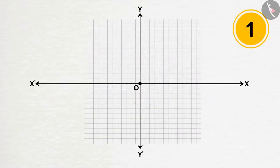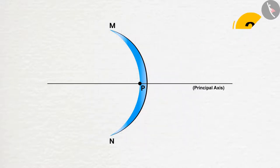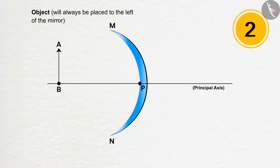1. Let P of the mirror be placed at the O of the coordinate system. 2. The object will always be placed to the left of the mirror. That means the light coming from the object will always fall from the left side of the mirror.